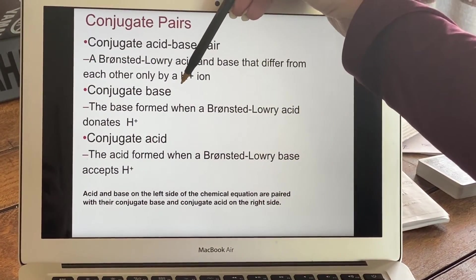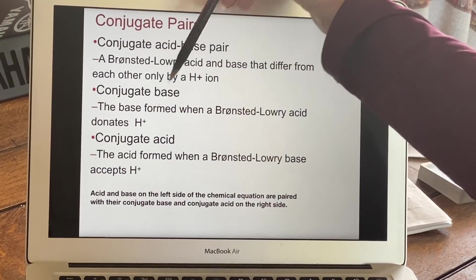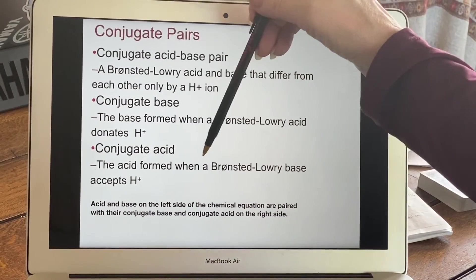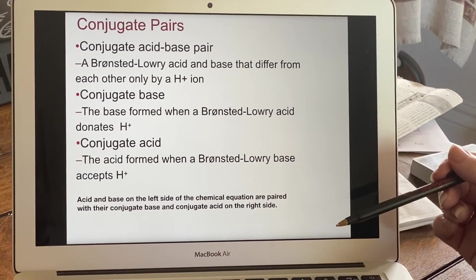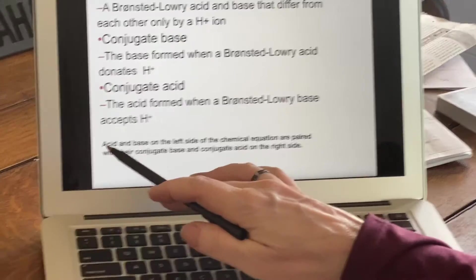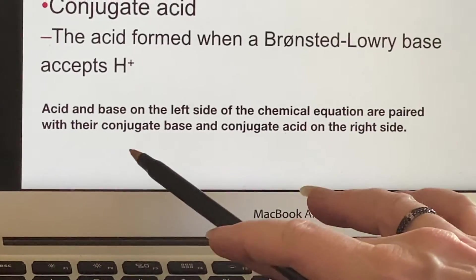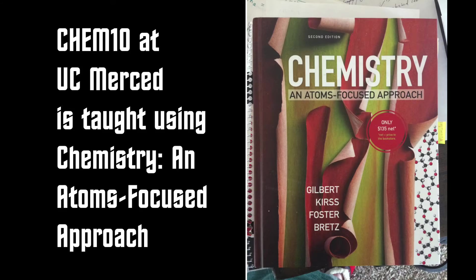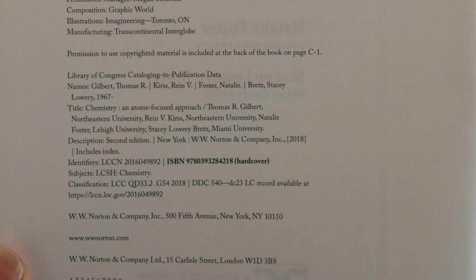So the conjugate base is the base that is formed when that acid has donated the proton, so it no longer has it. The conjugate acid is an acid form if Bronsted-Lowry base has accepted an H-plus. So when we write these, we will always write an acid and a base on the left side of the equation, and then on the right side, there will be a conjugate acid and a conjugate base.